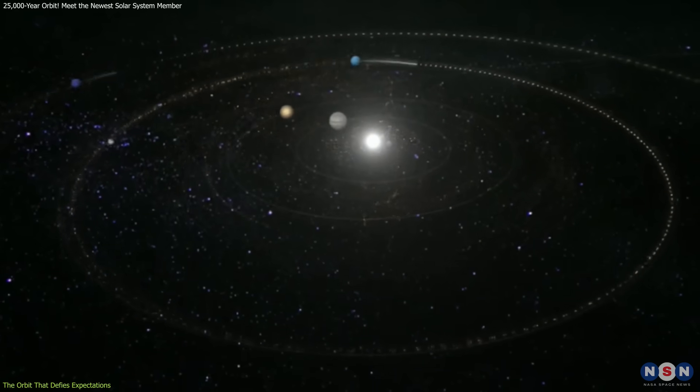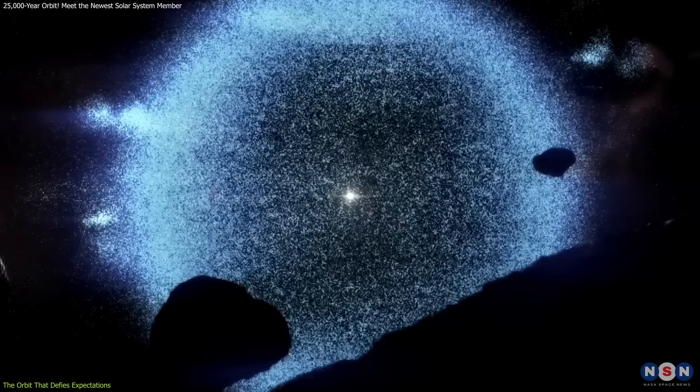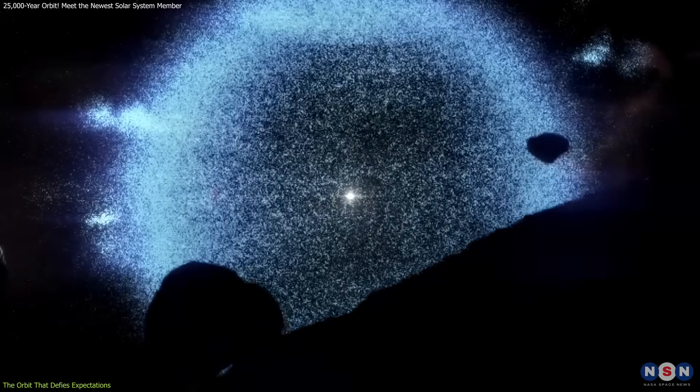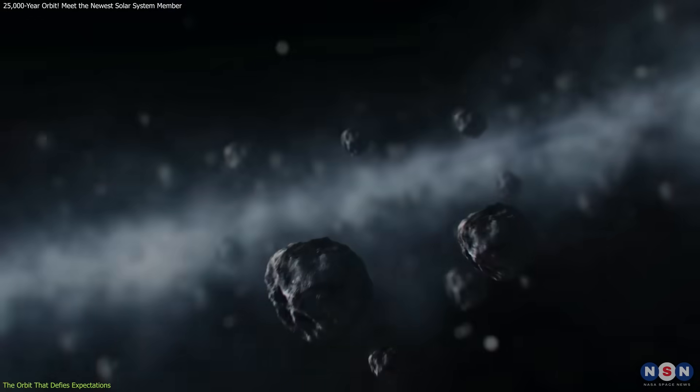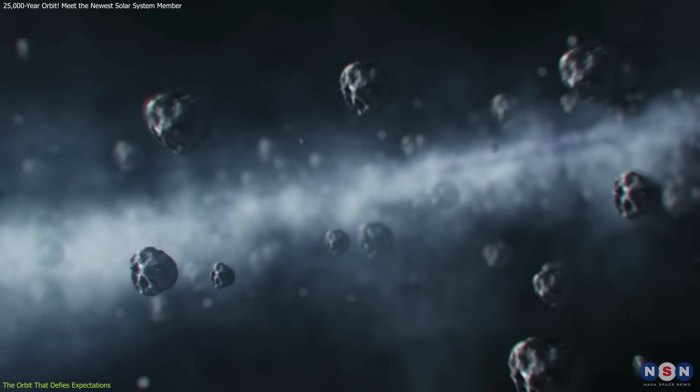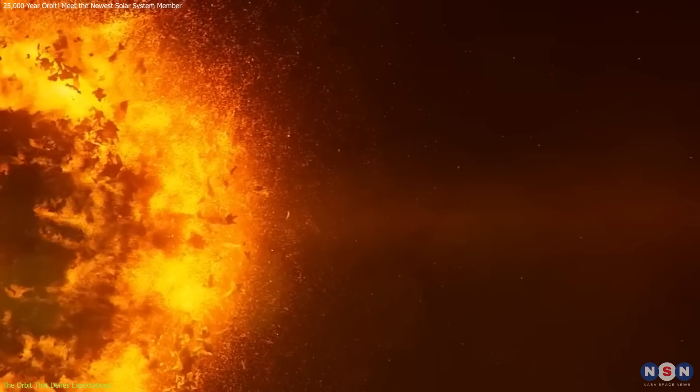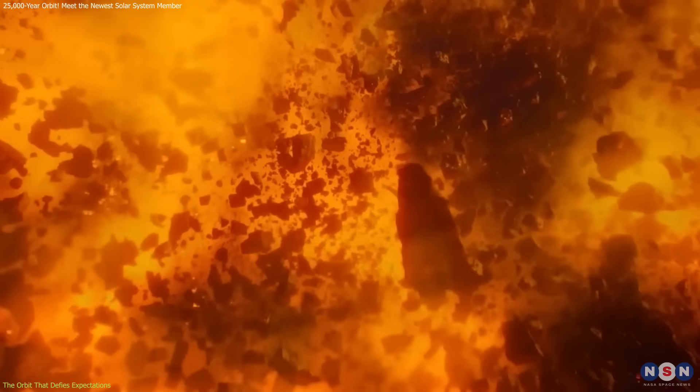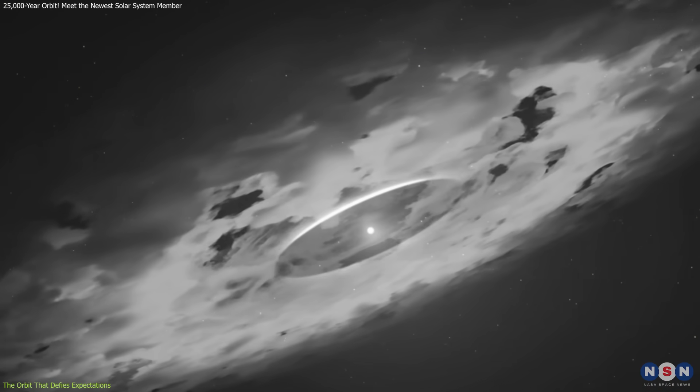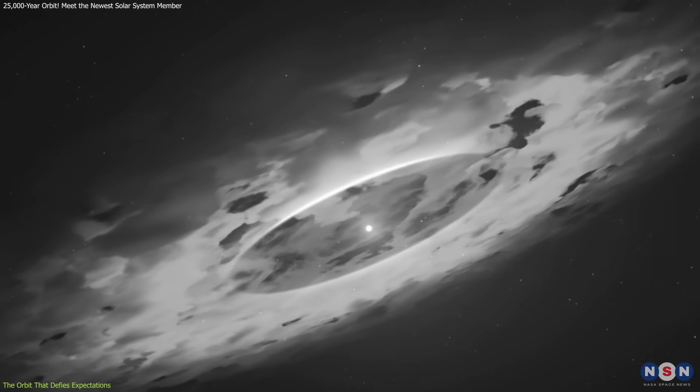Still others consider the possibility that it originated in the Inner Oort Cloud, an unexplored region populated by ancient, icy relics. Each possibility opens a window into the solar system's chaotic past, offering clues to how its architecture evolved over billions of years.